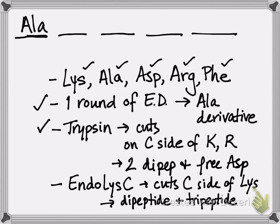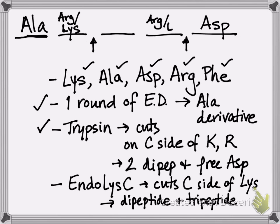Now, you take another sample and expose it to trypsin, which cuts on the carbonyl side of arginine and lysine, and you get two dipeptides and a free aspartate. So maybe there's a cut here and a cut there, with aspartate off on its own. For these types of problems, you draw where you think the cuts are, put your residues in spots, and then see if that makes sense with further clues. That would mean there's either an arginine or a lysine at each of those cut locations.